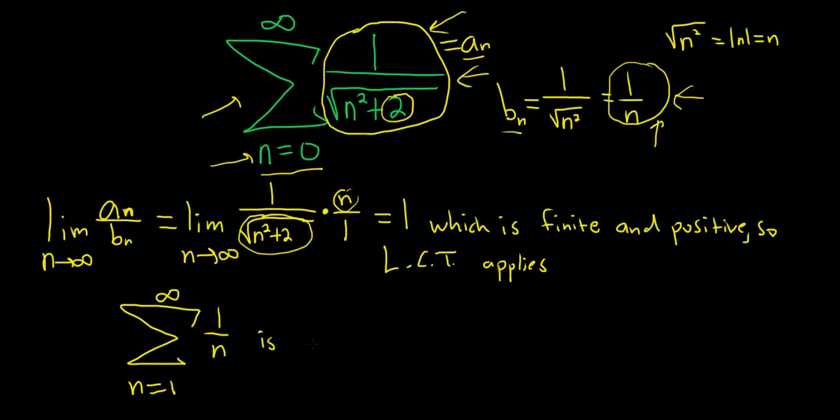This is a divergent p series. Why? Because it has p equal to 1, which is less than or equal to 1. Remember, this is the p there. So if p is bigger than 1, it converges. If it's less than or equal to 1, it diverges. So this diverges.